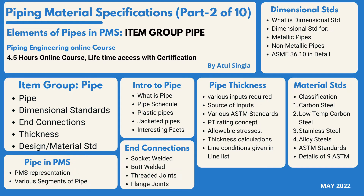First, we look into how the PMS is represented — the various segments of pipe. Then we start with pipe: what is pipe, how the pipe schedule is defined, plastic pipes, detected pipe, and a lot of interesting facts captured with respect to pipe in the piping material specification. The second part is dimensional standard — what it is, why it is required, and what the various dimensional standards are for metallic and non-metallic pipes.